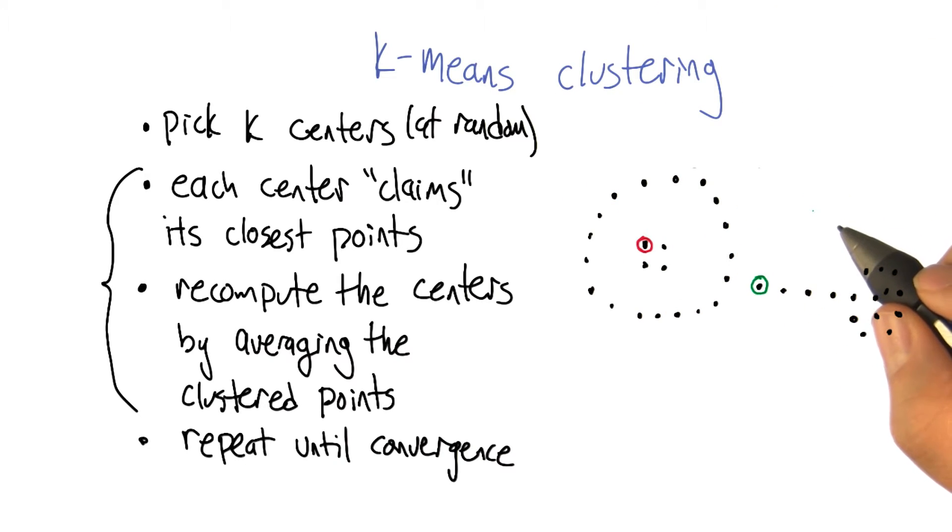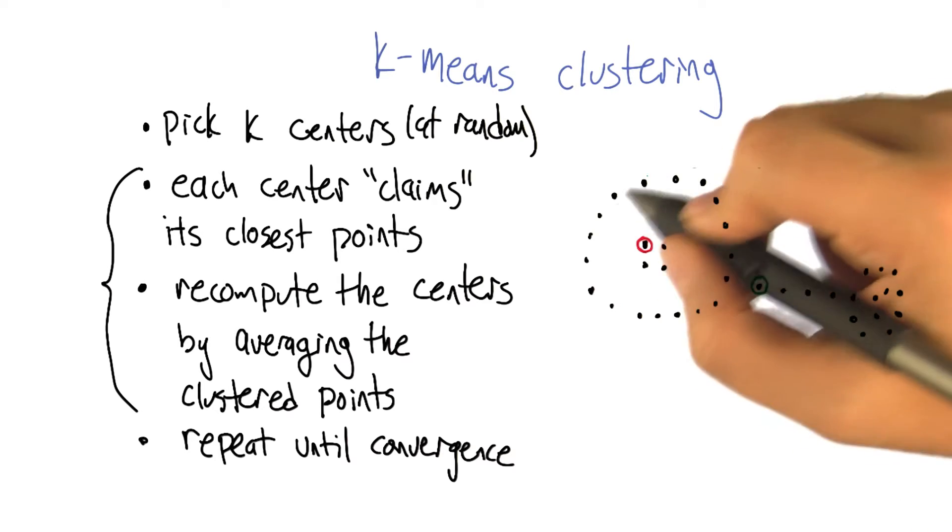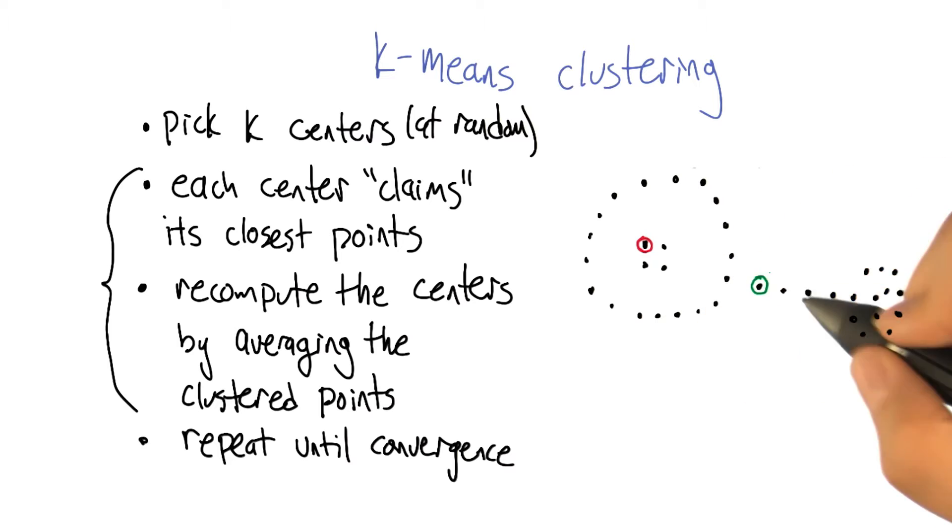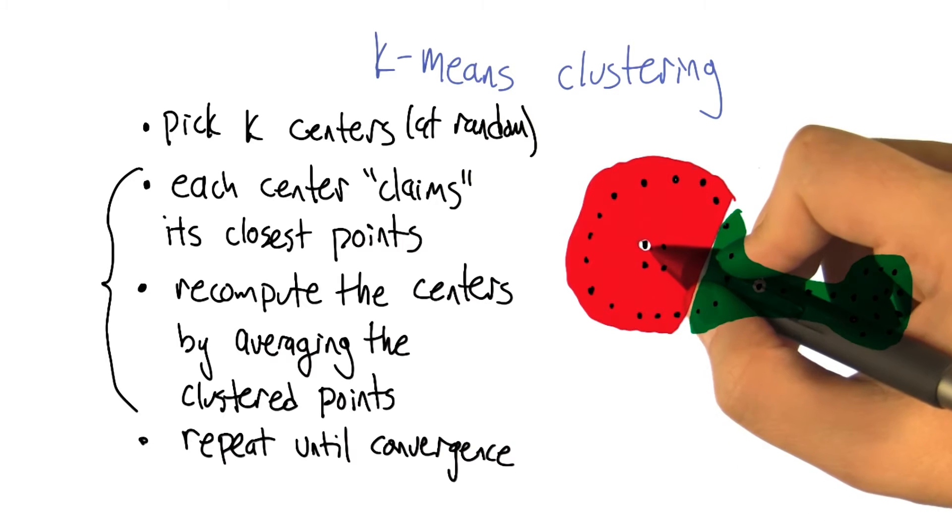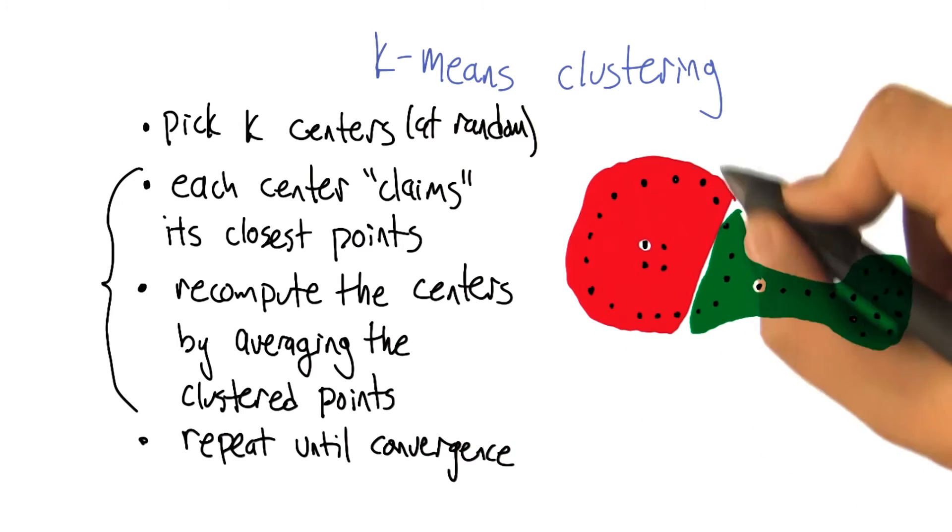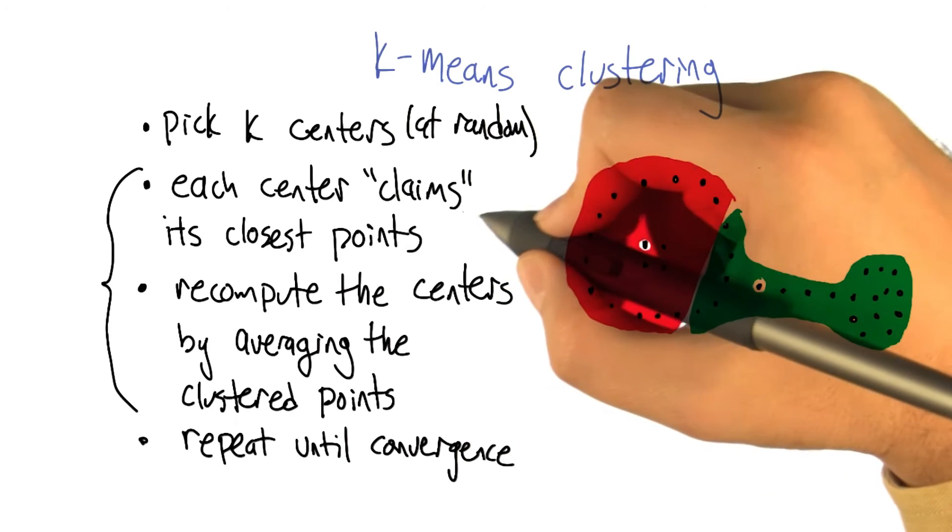Now what we're going to do is each of these centers is going to claim their closest points. So we're going to take all the points in the space and assign them to one or the other of these two clusters. And it ends up looking like this. So the points that are closest to the green center have all been put into a green blob. The ones that were closest to the red center all get put into the red blob. So that's step two.